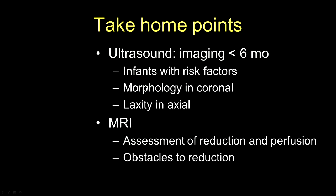In terms of take-home points: ultrasound imaging is the mainstay of imaging under six months of age and should be done on infants with risk factors or with an abnormal exam. Coronal images on ultrasound are used primarily for evaluation of morphology, whereas axial imaging is done primarily for dynamic imaging looking for laxity. MRI is done in complex cases after reduction and placement into the spica cast — for assessment of the reduction, for assessment of perfusion in patients who are hyper-abducted in a spica cast, and finally for obstacles to reduction. Thank you.